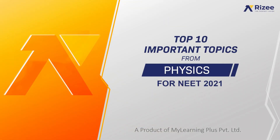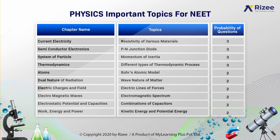Let's see the top 10 important topics from physics for NEET 2021. In the chapter current electricity, the important topic is resistivity of various materials. The probability of questions asked are 3. In the chapter semiconductor electronics, topic is PN junction diode. And the probability of questions are 3. In the system of particles chapter, the important topic is moment of inertia. Probability of questions asked are 3. In thermodynamics, the important topics are different types of thermodynamic processes. Probability of questions asked are 3.